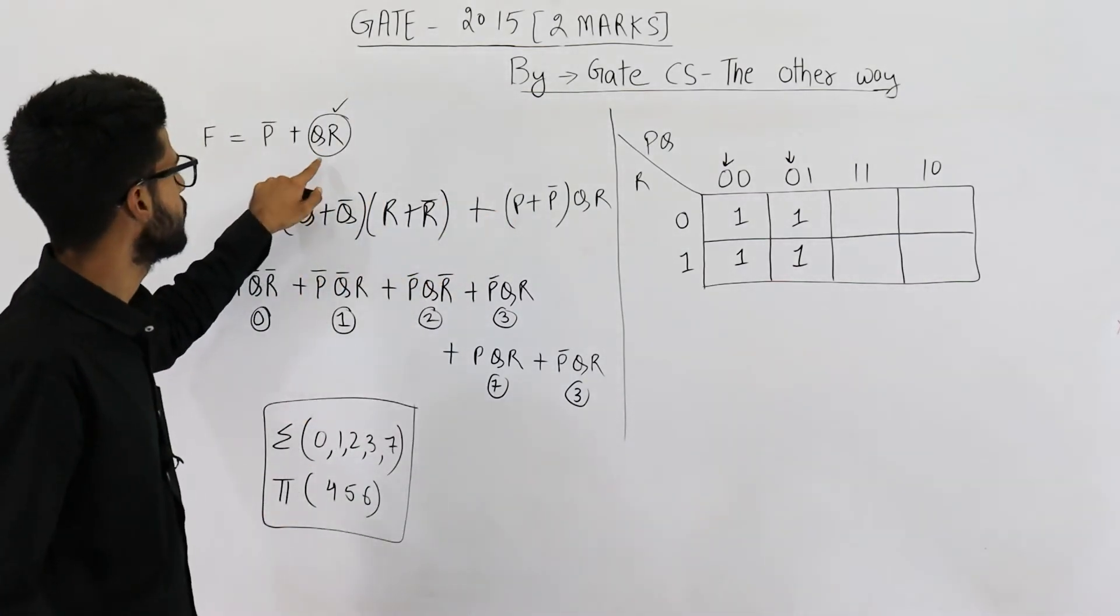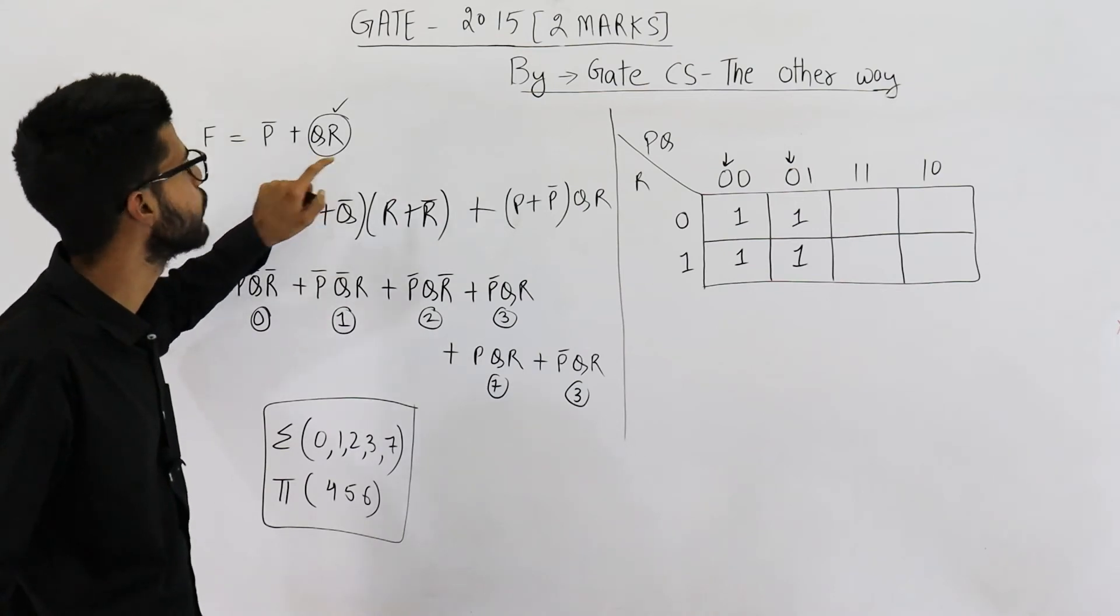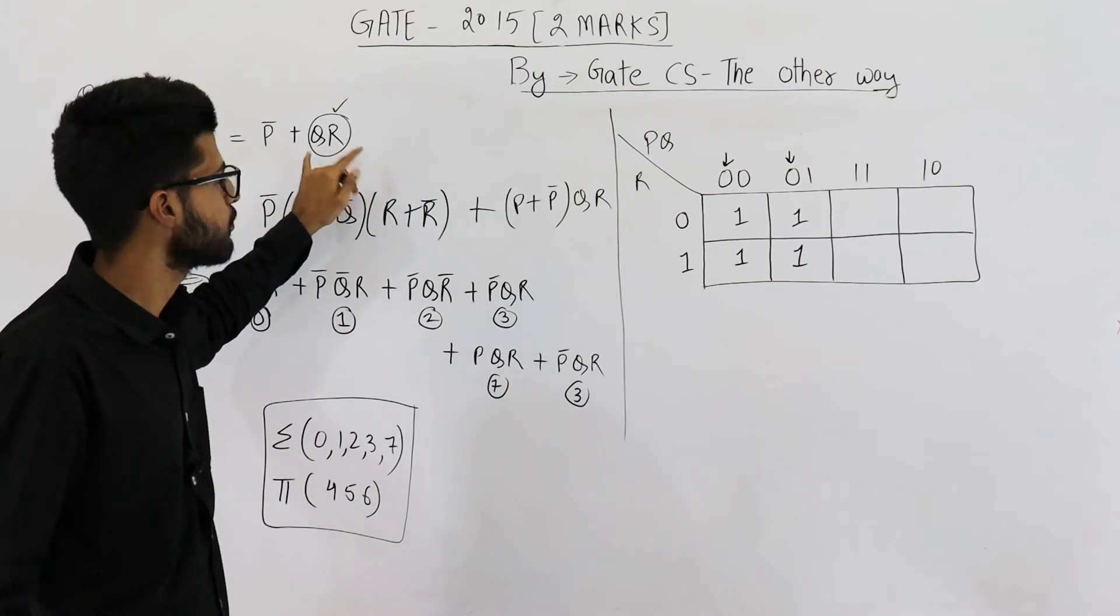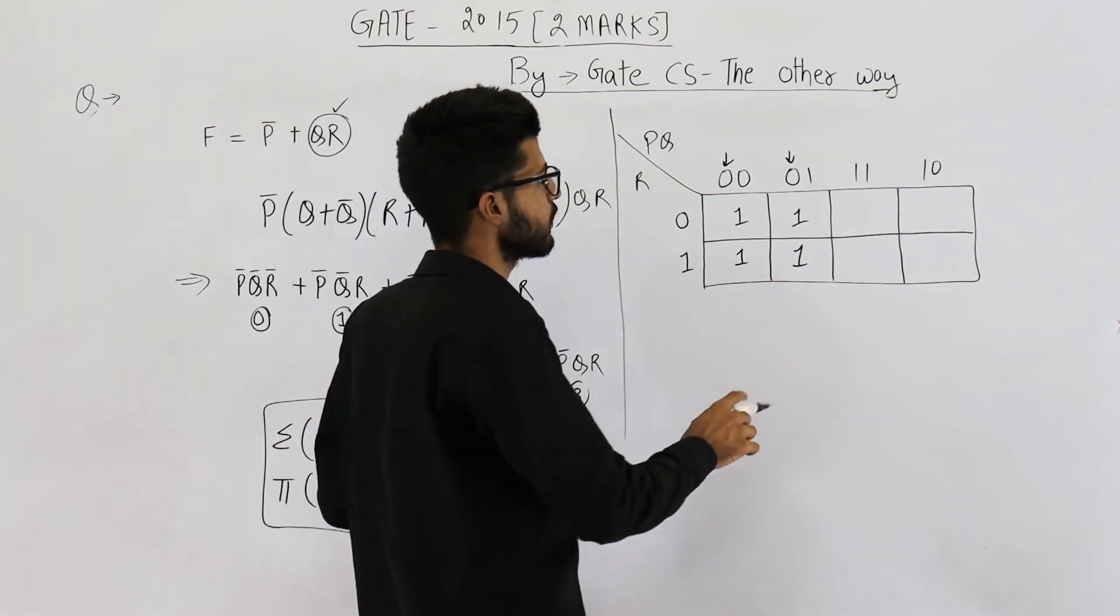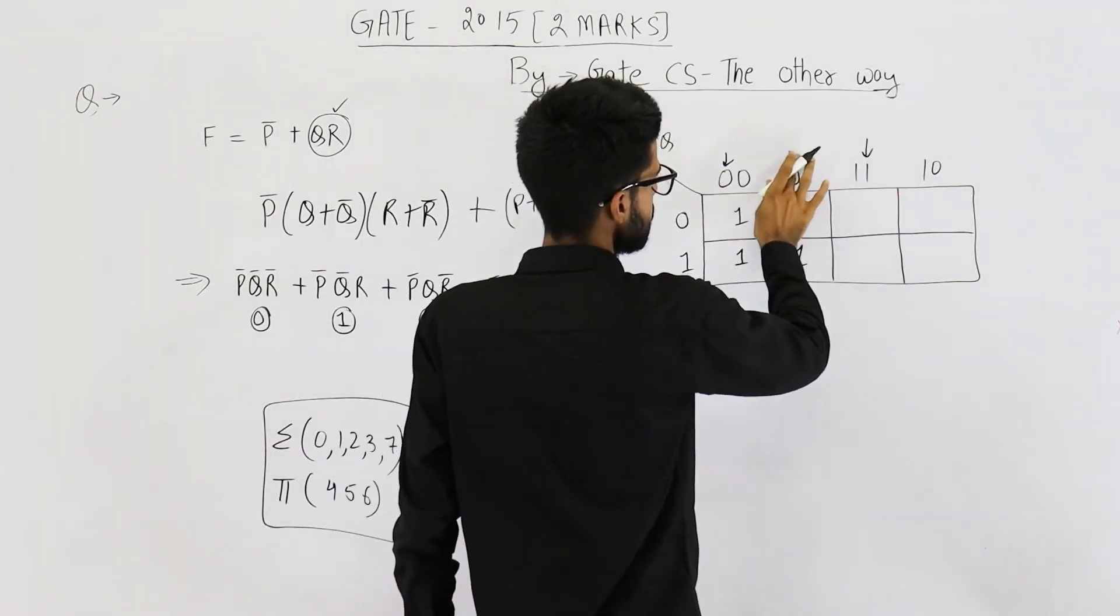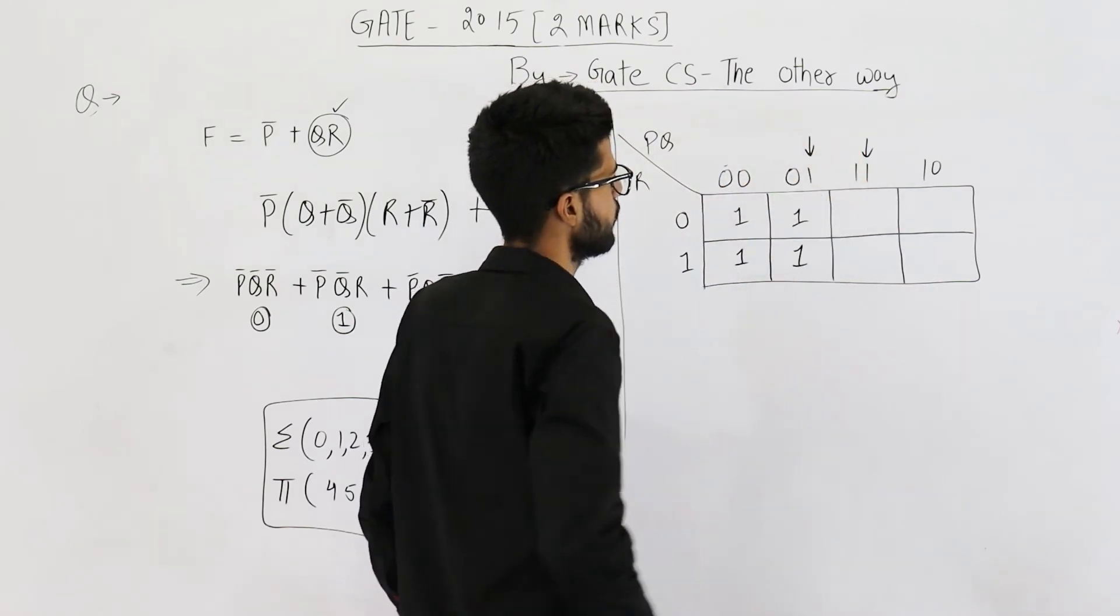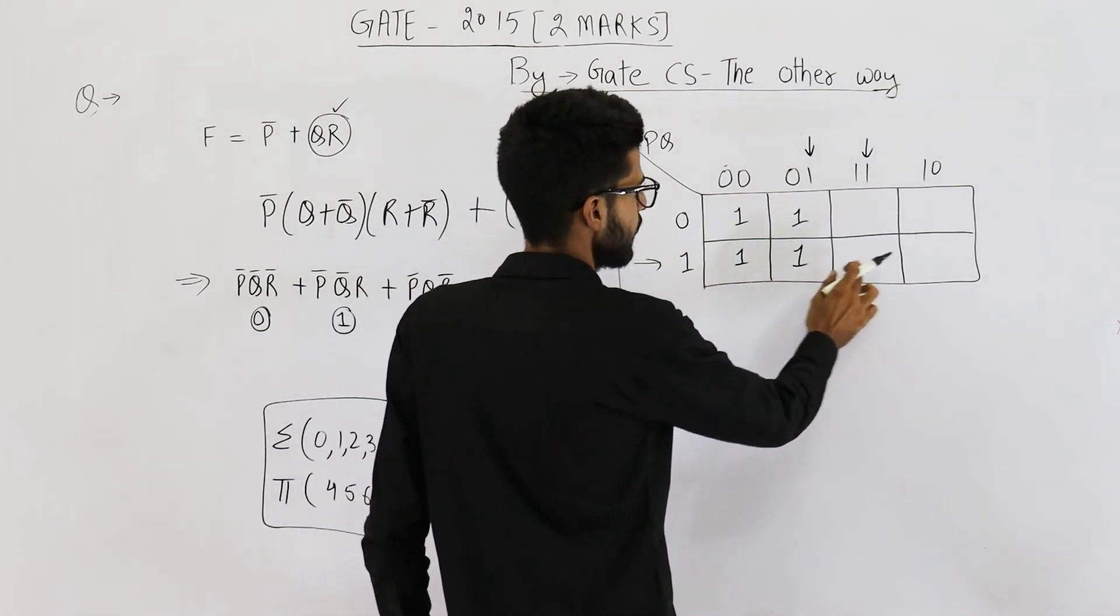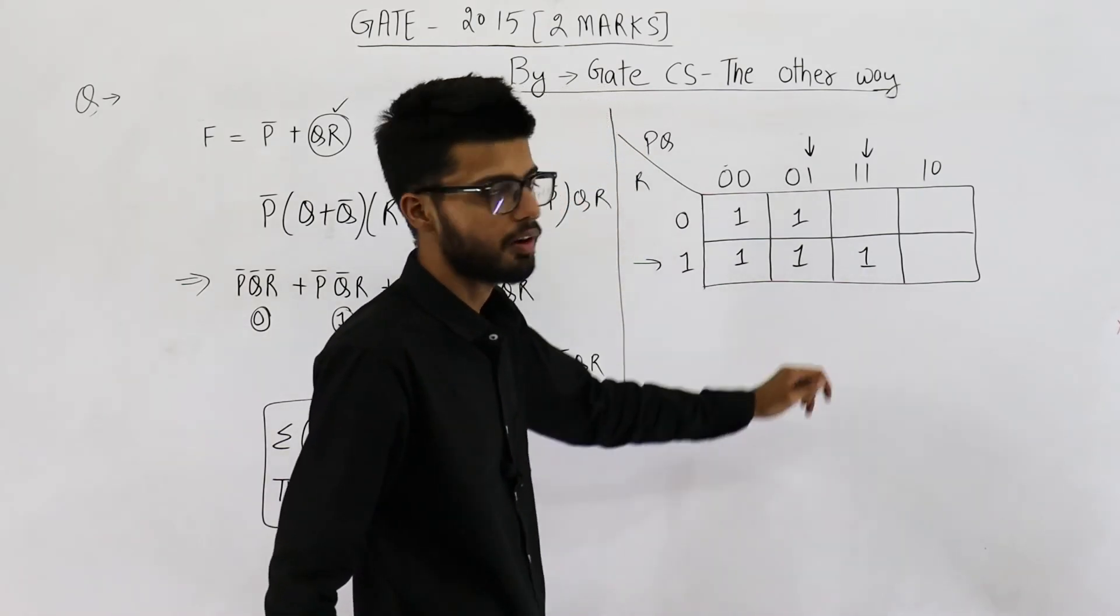Similarly, for this term, we will fill a 1 in all those cells where both Q and R are 1. Because we don't have a bar on Q as well as on R, both of them don't have a bar. So wherever value of Q and R is 1, just fill a 1 in that cell. So Q is 1 in this cell as well as in this cell. Sorry, in these 4 cells Q is 1 and R is 1 in these 4 cells. So the common part is this one. So we have filled the K-map.